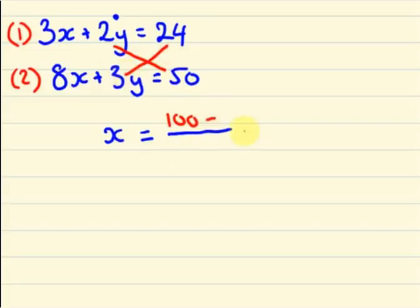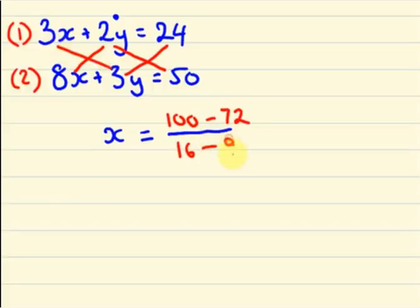24 into 3 is 72. Divided by: 2 into 8 is 16, minus 3 into 3 is 9. So x equals 100 minus 72 divided by 16 minus 9, that is 28 divided by 7. 7 is 4 times 28, so my x value equals 4.